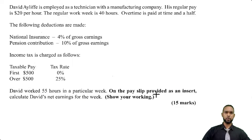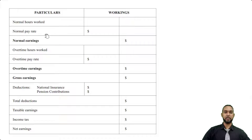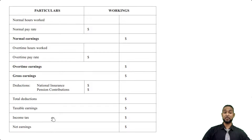So this was the format of the pay slip. You have: normal hours worked, normal pay rate, normal earnings; then overtime hours worked, overtime pay rate, overtime earnings. You add these two earnings together to get your gross earnings. Then you have your deductions, and total deductions by adding those items. You also have taxable earnings, with some room for calculations. Income tax is charged at 25% on taxable earnings. Net earnings is your gross pay minus the deductions and your tax.